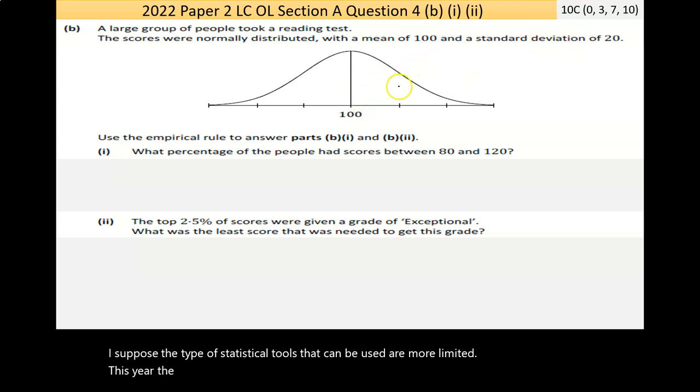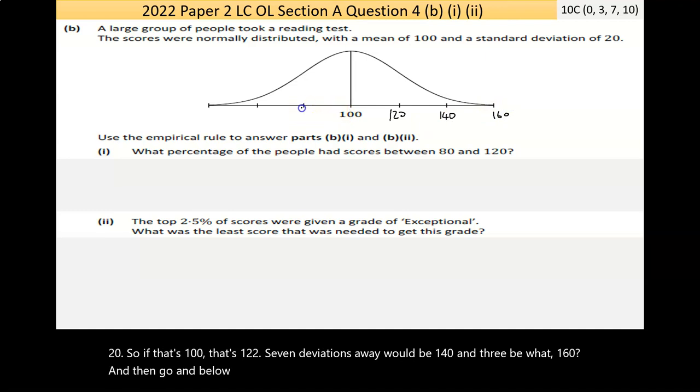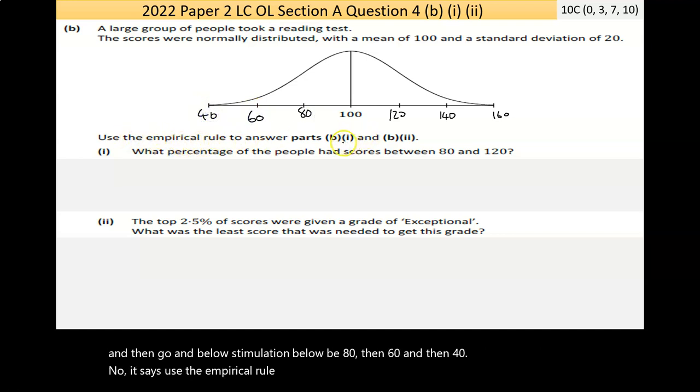It says the standard deviation is 20, so we know that one standard deviation away is plus or minus 20. That's 100, that's 120. Two standard deviations away would be 140, and three would be 160. Going below, one standard deviation below would be 80, then 60, and then 40. Now it says use the empirical rule to answer parts B1 and B2.